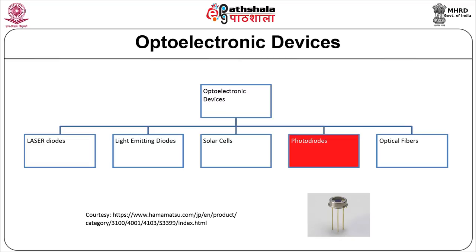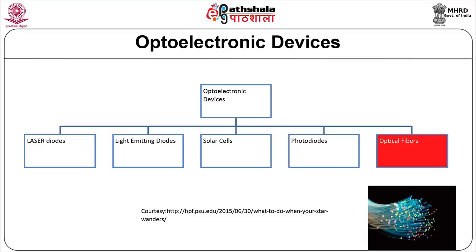Photoconductive devices, such as photo resistors, are widely used in counting systems, twilight switches, house security systems, etc. These detect variations in the light intensities and activate or deactivate the electronic circuits. Photodiodes and phototransistors are also in this particular category. These utilize reverse bias junctions for generating current when illuminated.